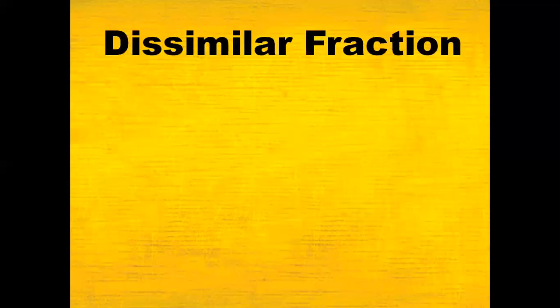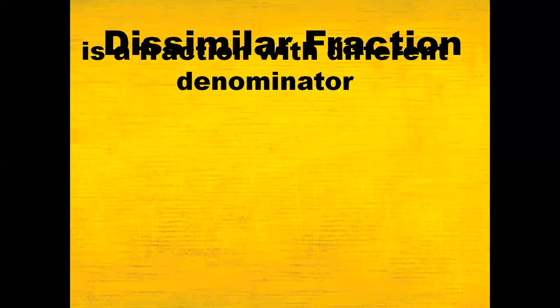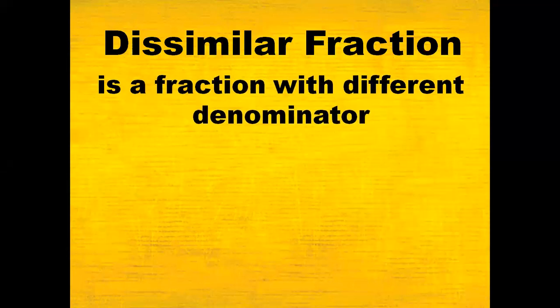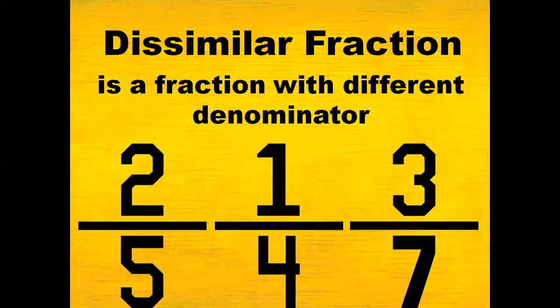Now, what is a dissimilar fraction? A dissimilar fraction is a fraction with different denominators. For example, 2 fifths, 1 fourth, and 3 sevenths — their denominators are 5, 4, and 7, and they are all different. So it means that they are dissimilar fractions.